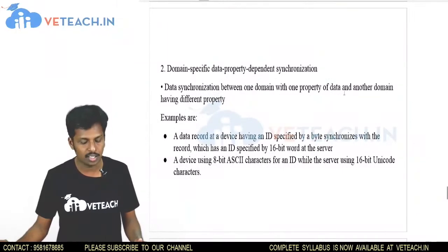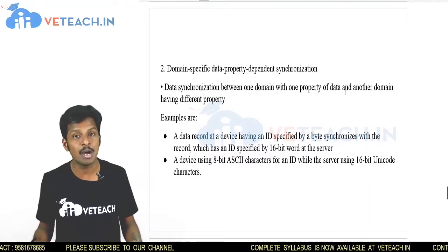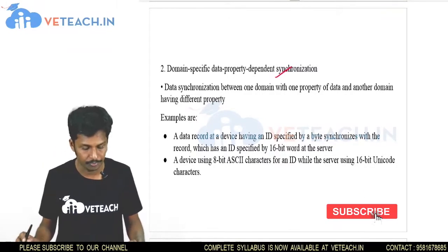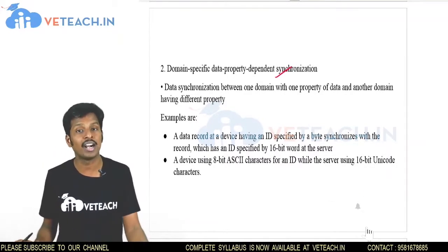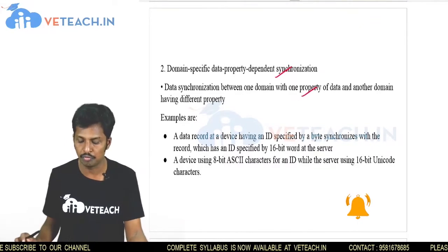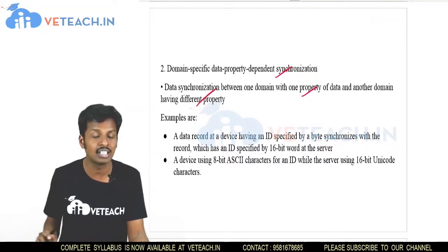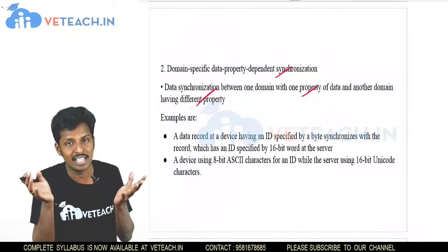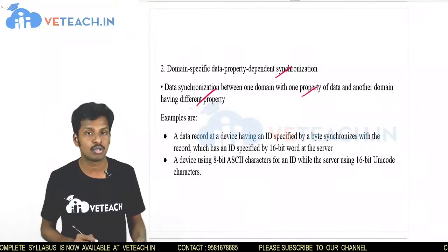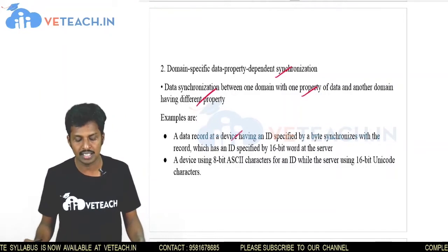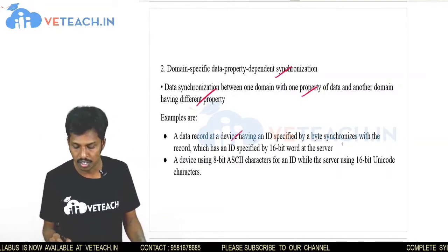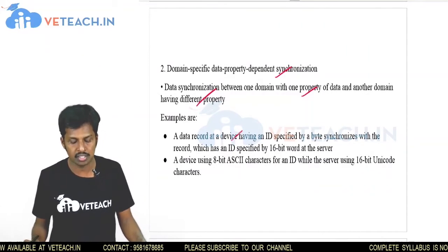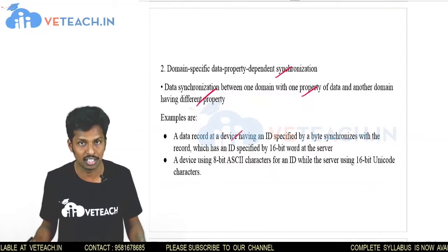The next topic is domain-specific data property dependent synchronization, where we consider data synchronization between one domain with one property of data and another domain having a different property of data. If the properties of the data change, they must be synchronized. Example: a data record at a device has an ID specified by an 8-bit byte, synchronized with a record having an ID specified by a 16-bit word at the server.